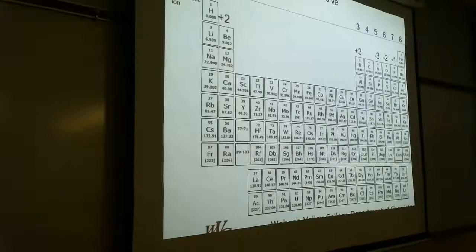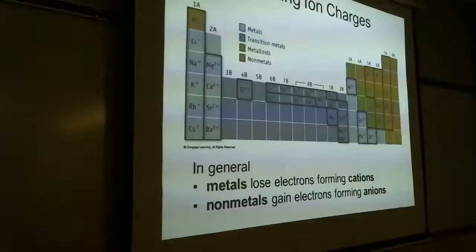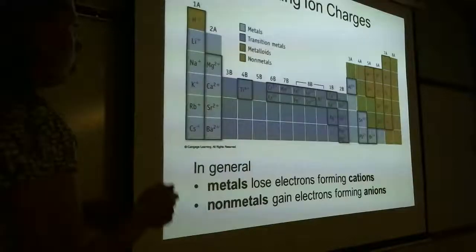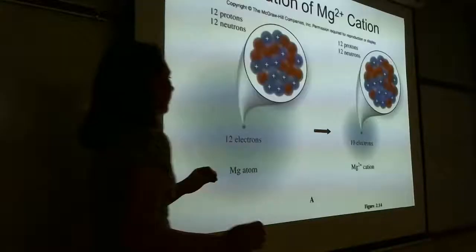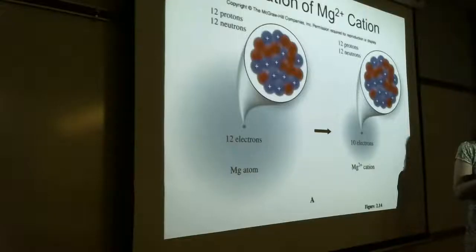We're going to skip group four for now. Group five: it's easier to gain three electrons than to lose five, so these form anions with a charge of negative three. Gaining three electrons makes the net charge negative. Then group six is negative two and group seven is negative one. Group eight already has eight valence electrons and forms no ion.